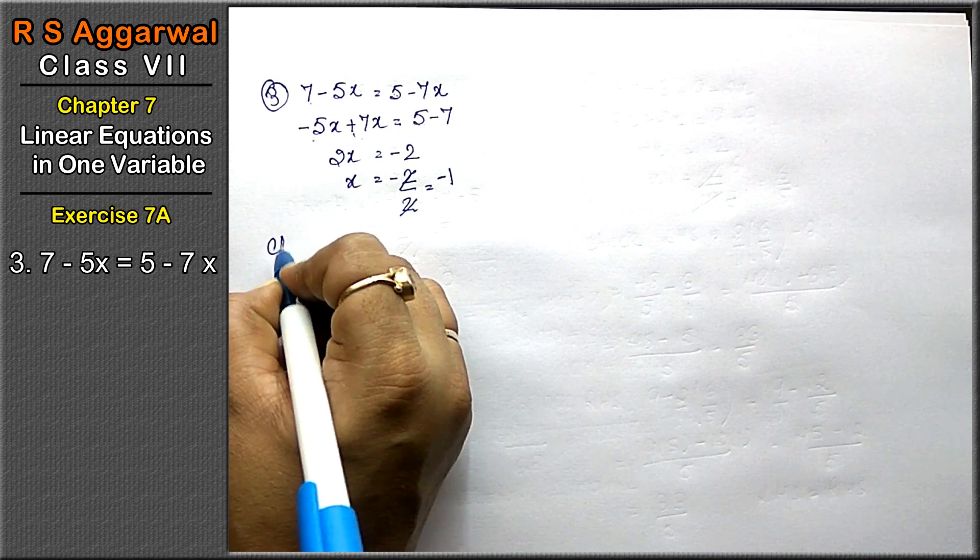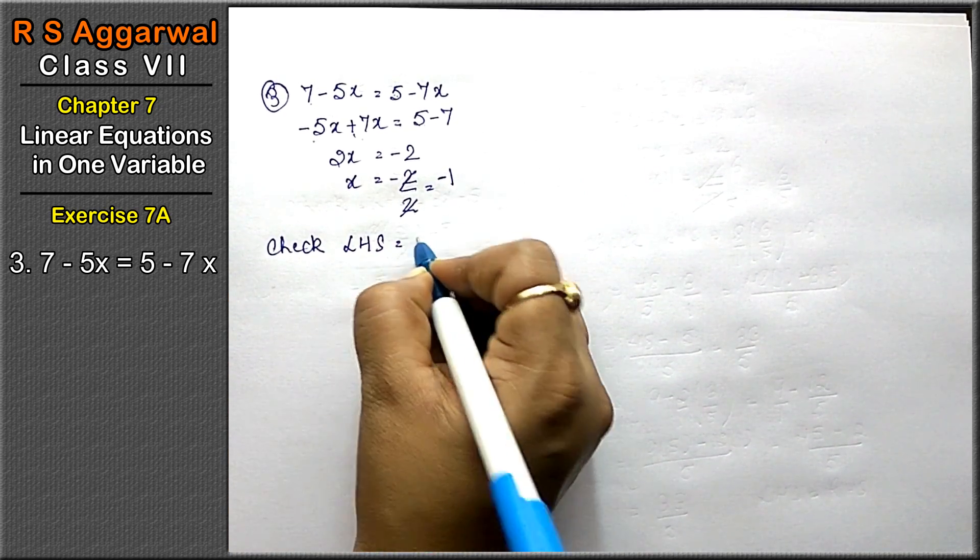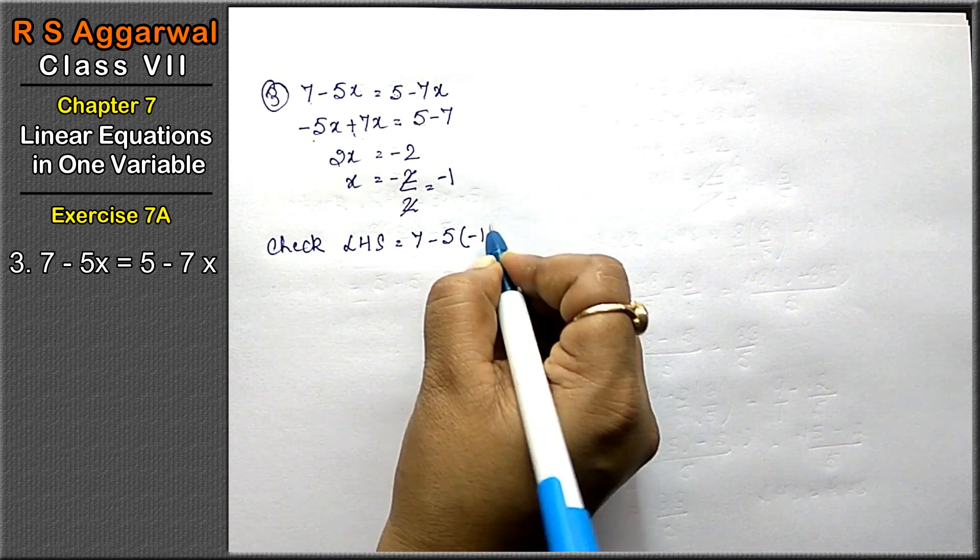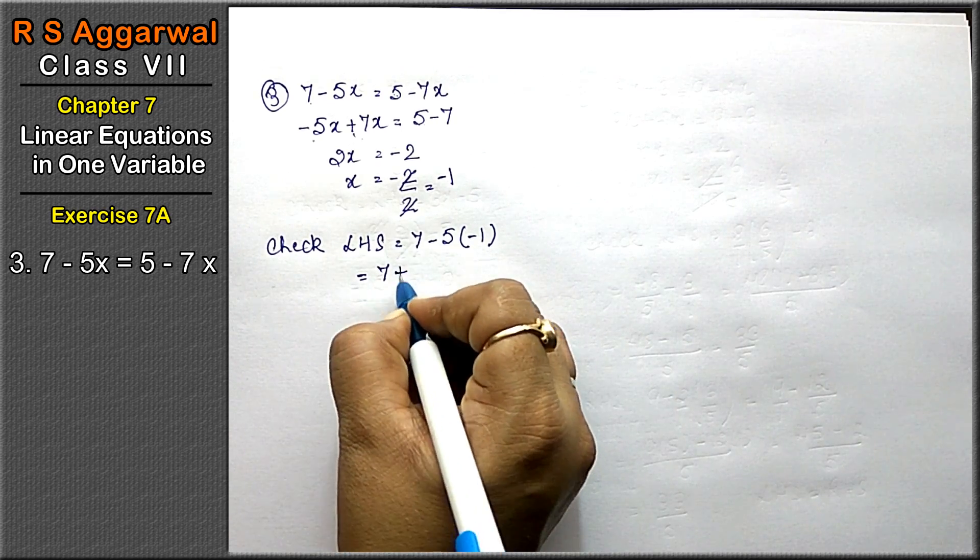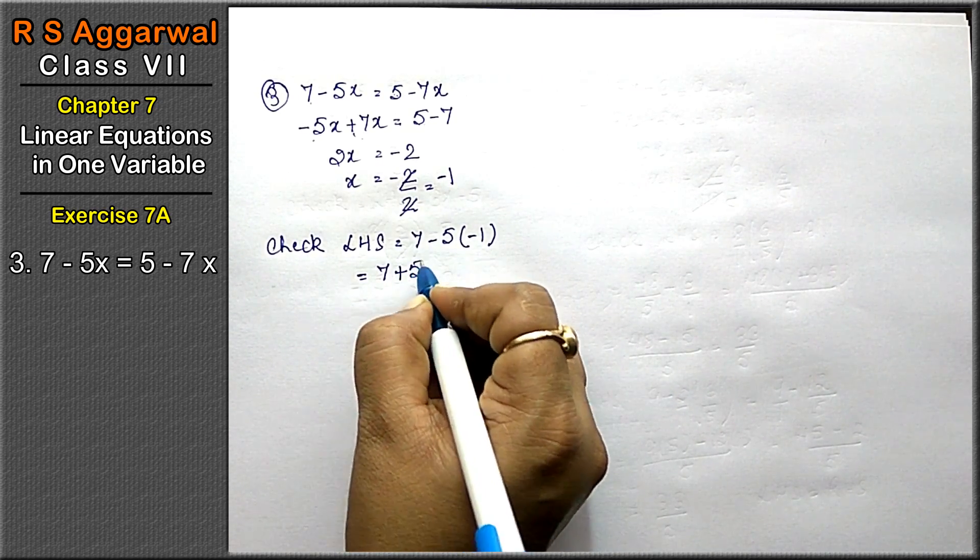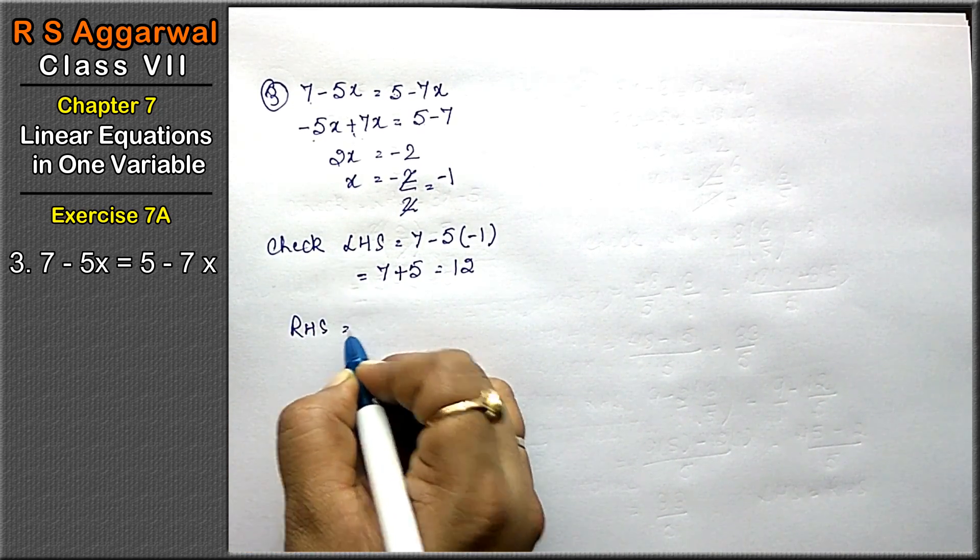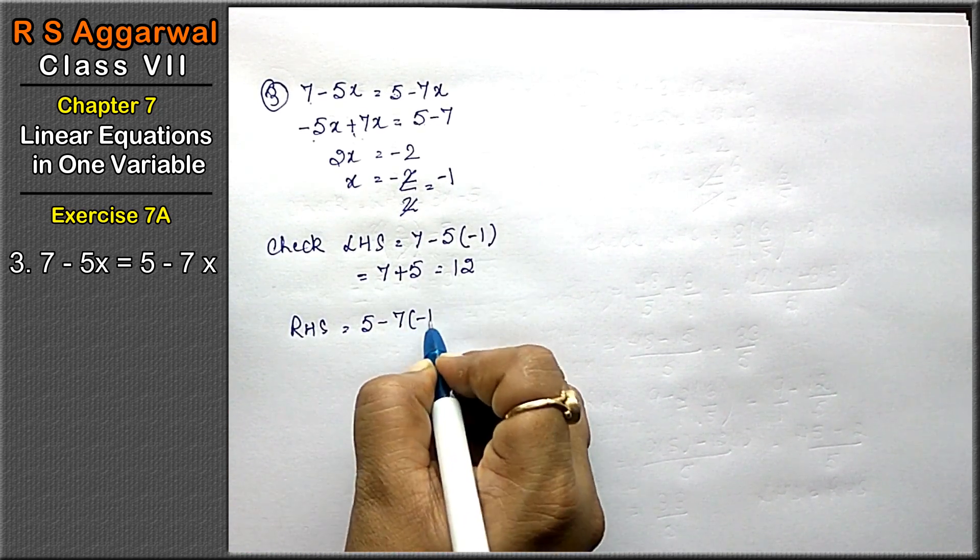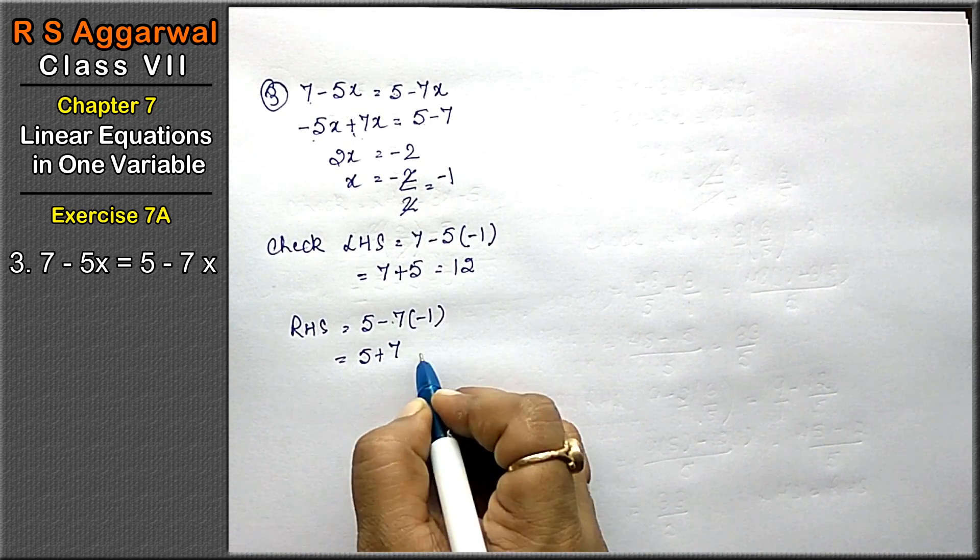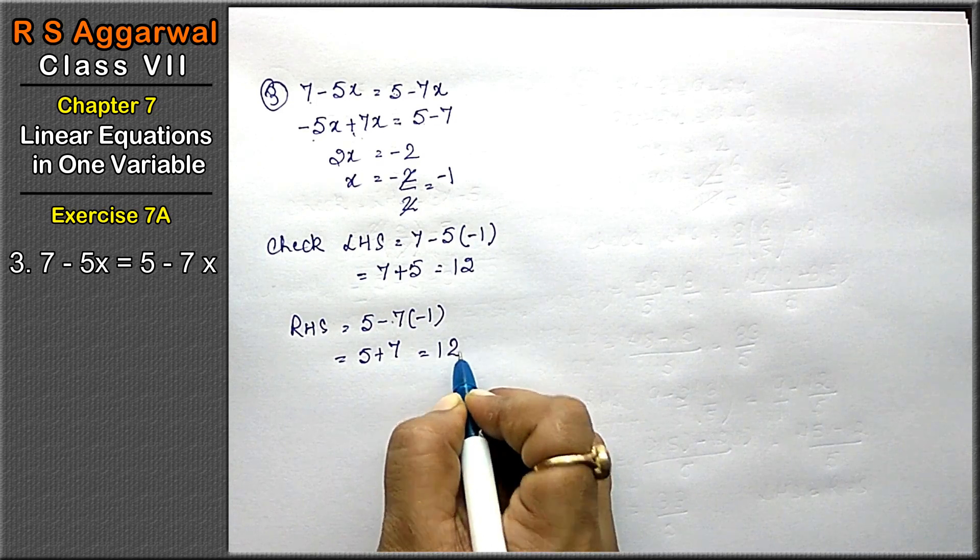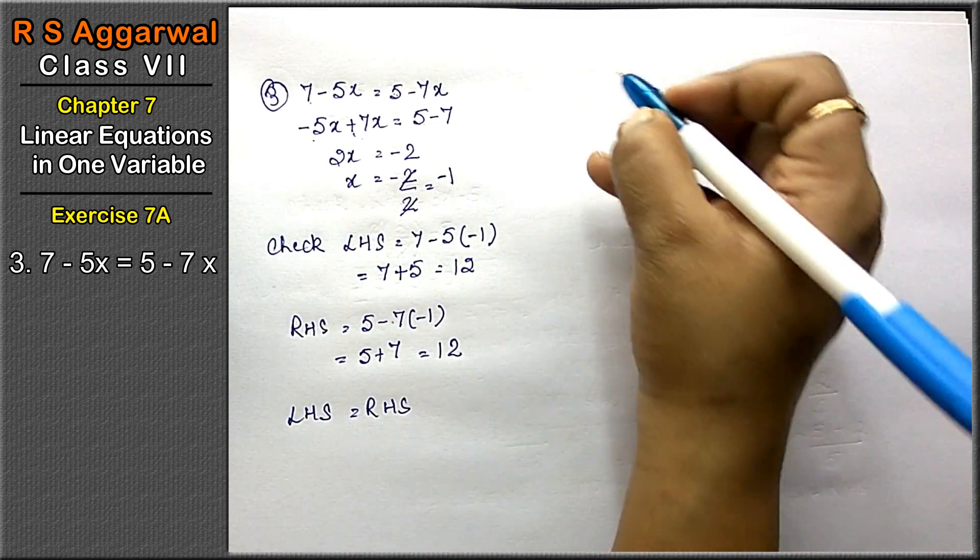Now we will check. Left hand side is 7 minus 5 into minus 1. 7 minus minus becomes plus 5, which equals 12. Right hand side: 5 minus 7 into minus 1. 5 minus minus becomes plus 7, that equals 12. Left hand side equals right hand side.